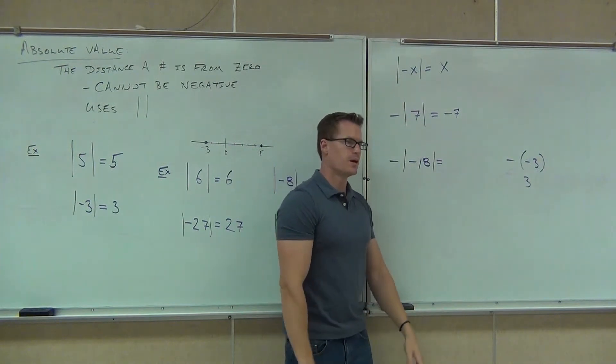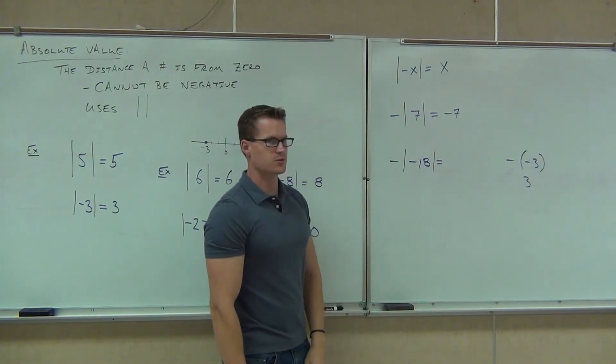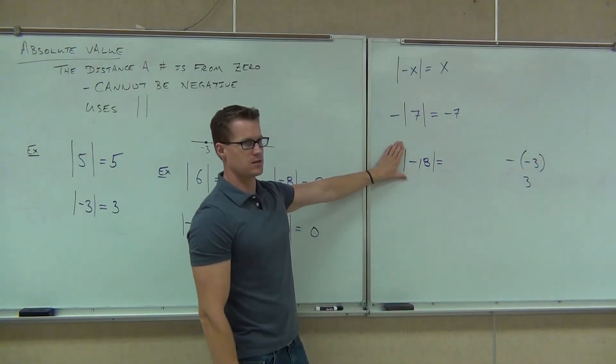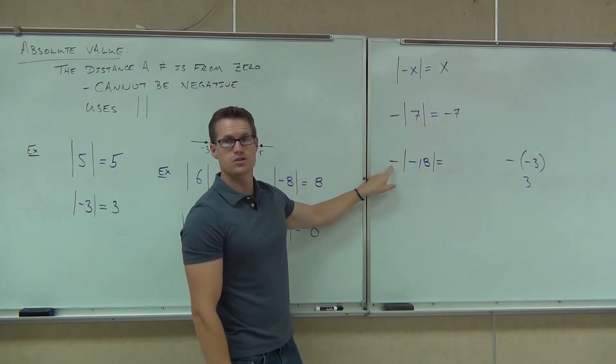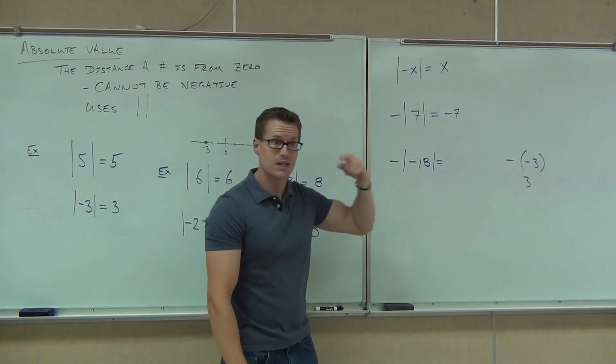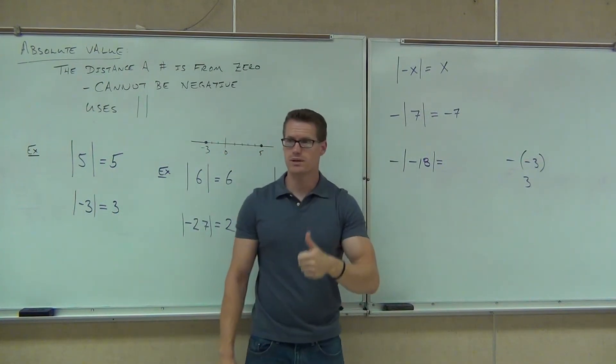Absolute value says you've got to take this into account before you can start talking about anything else. Are you with me on that? This process doesn't work. What this one says to do, it says how much is the absolute value of negative 18? 18. And then you're going to add the negative. So it's going to be how much? Negative 18. That's exactly right. Did you get negative 18? Yeah. Good for you. That's awesome.